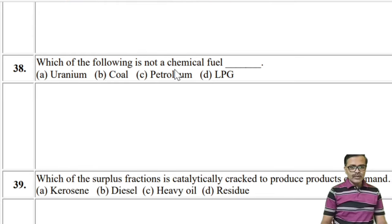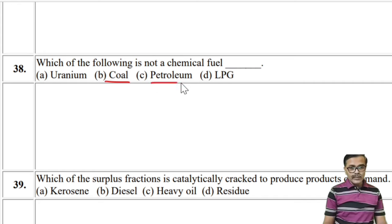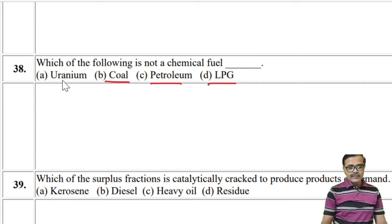Which of the following is not a chemical fuel? Chemical fuels are fossil fuels — coal, petroleum, LPG are chemical fuels. Uranium is not a chemical fuel; it is a nuclear fuel. So uranium is the answer.